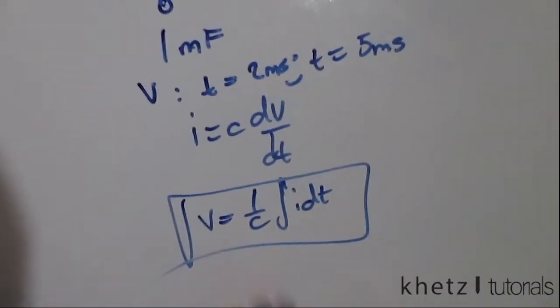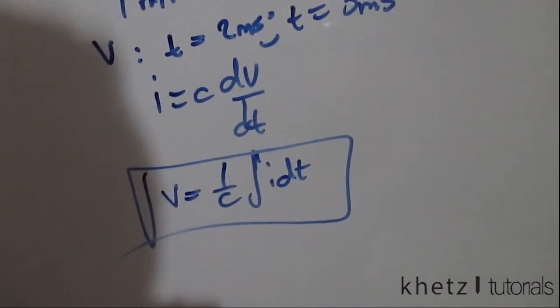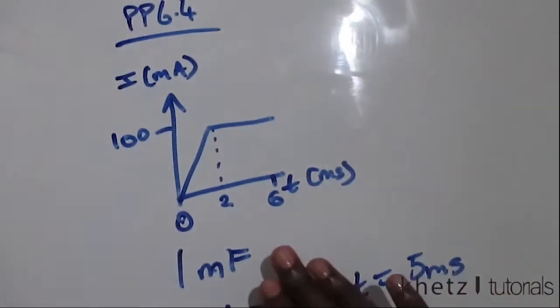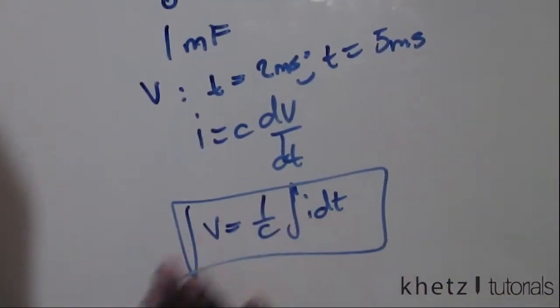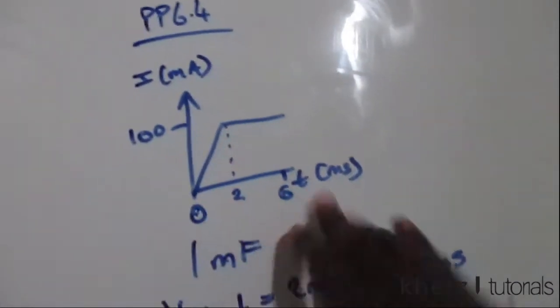You could either do the integral directly by calculation, or you can interpret this as being the area which is below the graph. As you know by now, an integral is the same as the area below a graph.